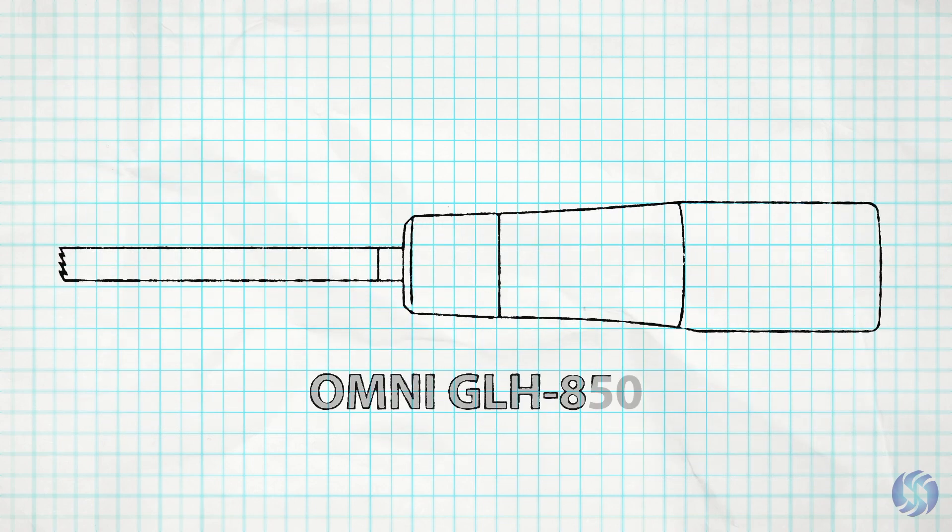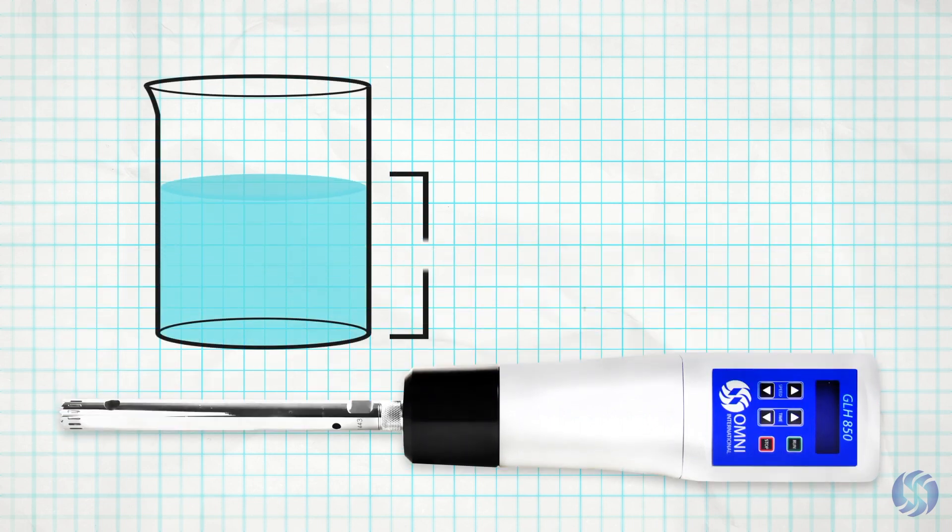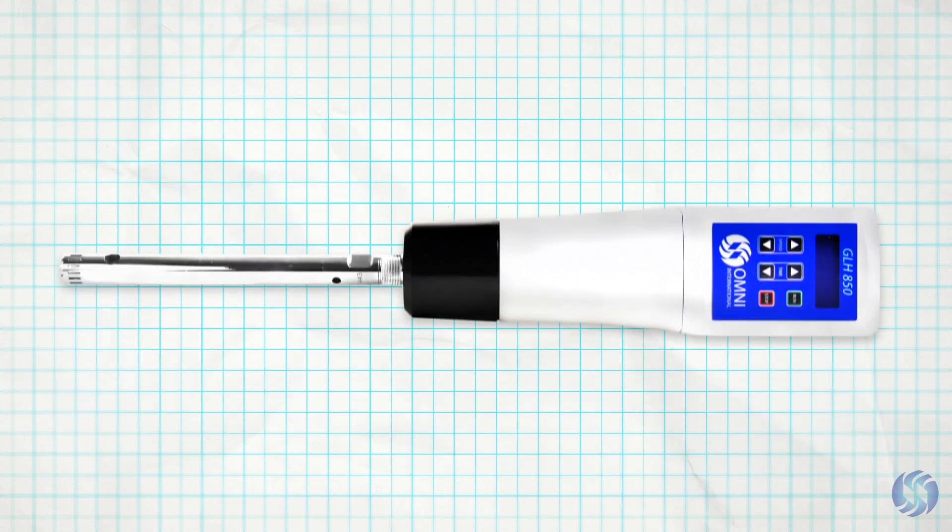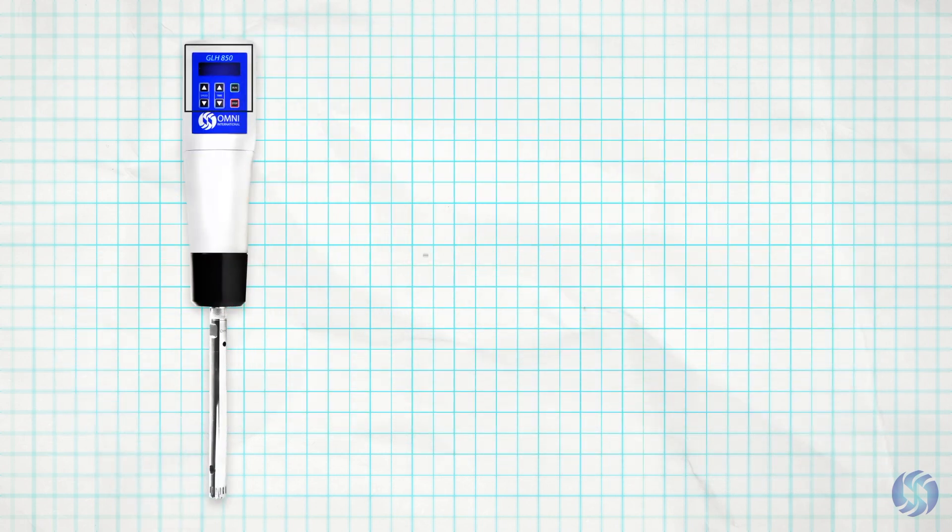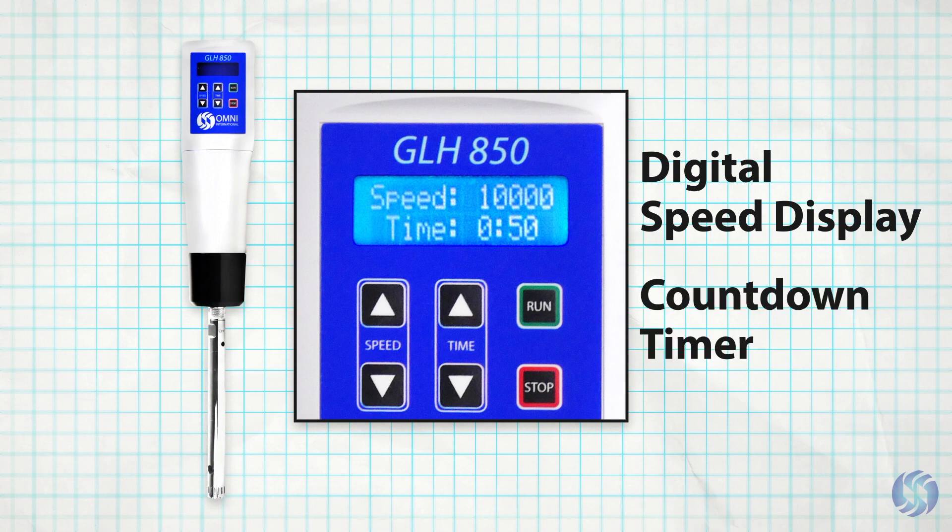The Omni GLH850 is a larger, more powerful motor capable of processing samples up to 5 liters in volume. The 850 is the only model in its class and price range that features both a digital speed display and timer for walkaway processing.